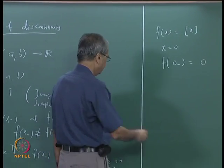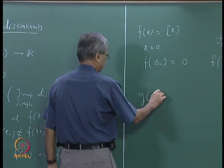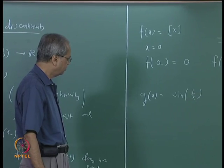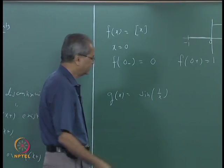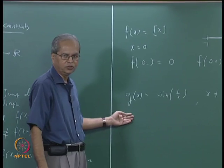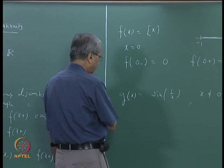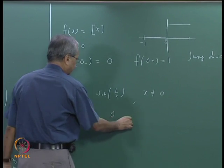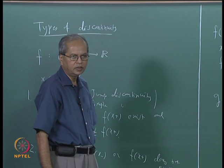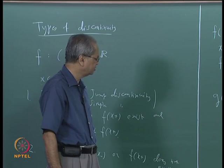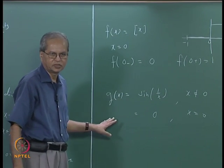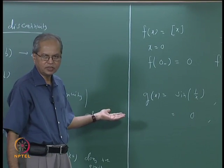Let us take another example: g(x) = sin(1/x). This is not defined at x = 0, so let us assign g(0) = 0 for convenience. We will see that neither g(0⁺) nor g(0⁻) exists — neither the right-hand limit nor the left-hand limit exists at x = 0.